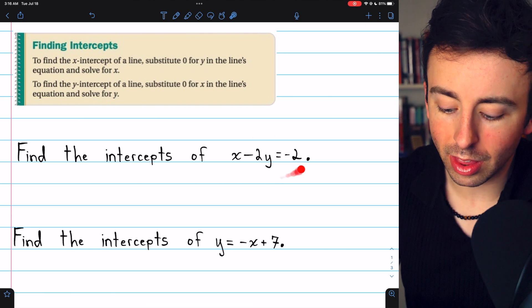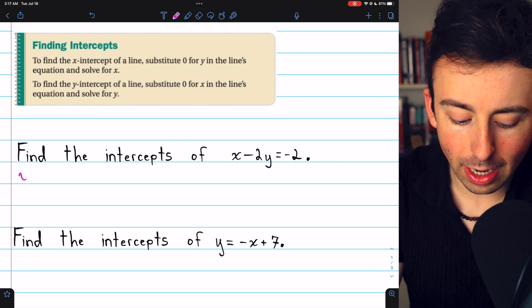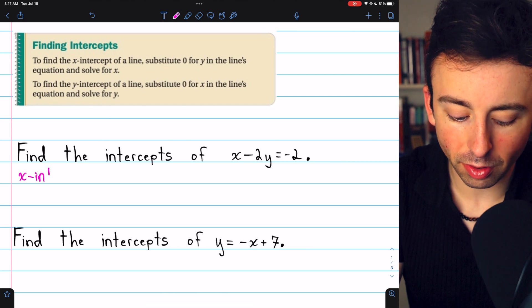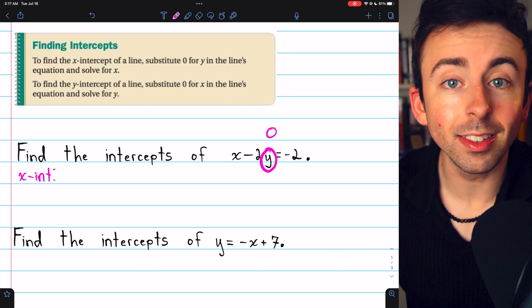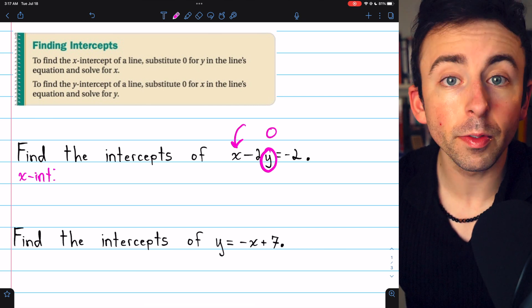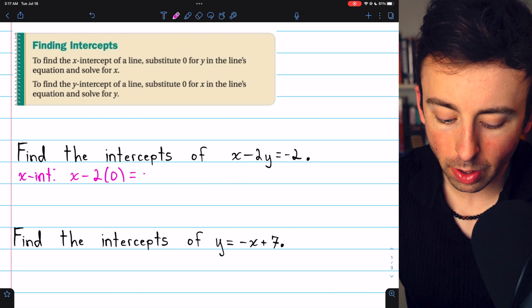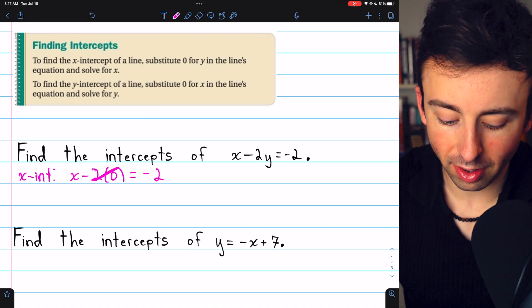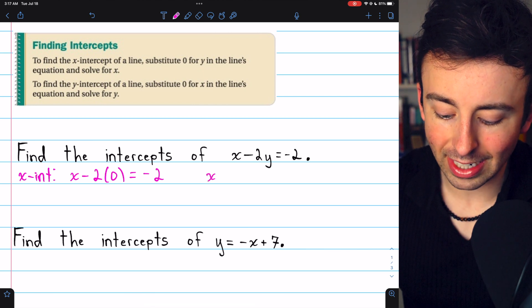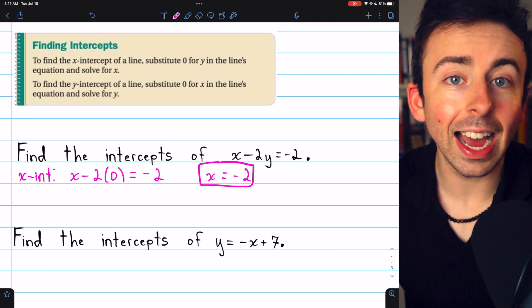So let's give it a try with this equation here: x minus 2y equals negative 2. We'll begin by finding the x-intercept. Again, to find the x-intercept, we need to set y equal to 0 and then solve for x. Setting y equal to 0 in this equation, we have x minus 2 times 0 equals negative 2. 2 times 0 is just 0, so we don't have to worry about that. That's going to lead us to x equals negative 2, and that is the x-intercept.